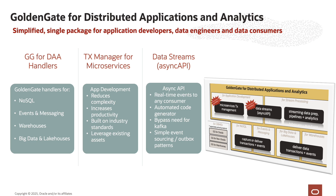GoldenGate for distributed applications and analytics is a single product package that you can use for your strategic use cases. You can ingest real-time data into fabric environments, Delta Lakes, into NoSQL data stores, and into event message streaming platforms. You can also capture change data from NoSQL data stores and from message streaming platforms. Using GoldenGate data streams, you can create Async API PubSub channels to make change data available in JSON format for your developers. In this session, we will deep dive into GoldenGate's Apache Iceberg replication capabilities.